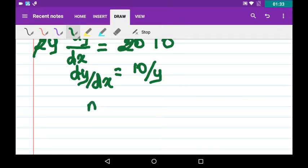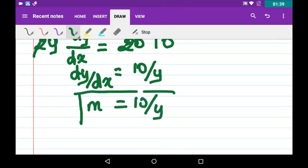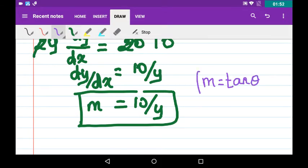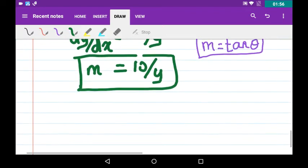So this dy/dx is m = 10/y. While explaining the formula in the first video, I gave you another hint: slope m = tan θ. This one I gave in the formula section. Please check out that video to know more. m = tan θ.